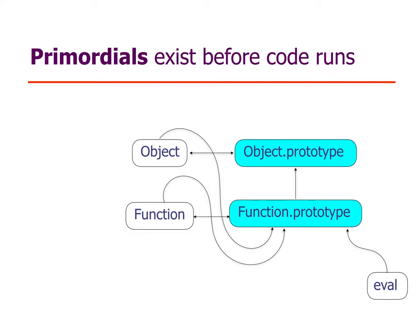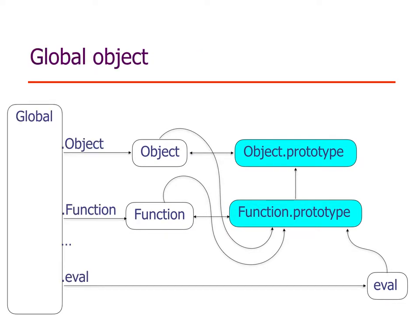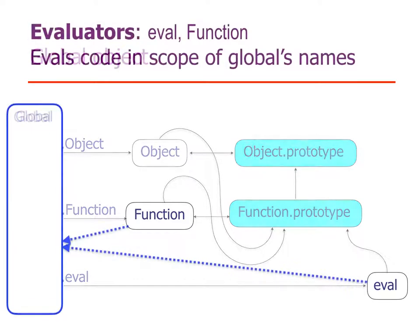These are the primordial objects — the ones that exist before code starts to run. In addition, there's a global object which has obviously global property names that point at various global objects, and those global property names are aliased to the global scope for variable lookup. There's a special relationship of the evaluators to the global object: those evaluators evaluate code with the free variables of that code being looked up in properties of the global object.